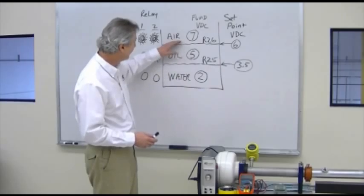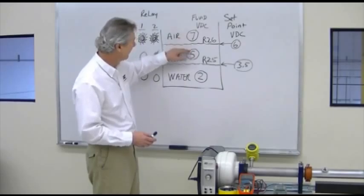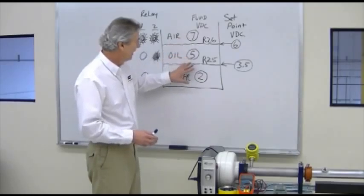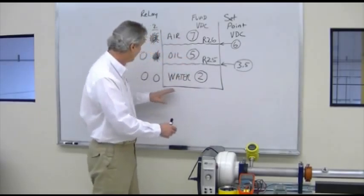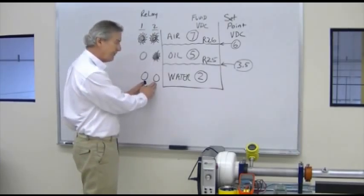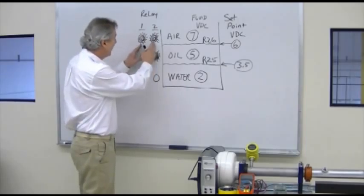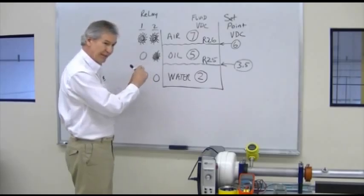And then, to detect the oil-air interface, we set R26 to 6 volts, halfway between the 5 and the 7 volts. And then, we turned the beaker, and we were observing the lights and how they function. Both lights were off for water. One light was on for oil. And both lights were on for air. This indicates the relay states. And by using the relay logic, you can tell which state that you're in.